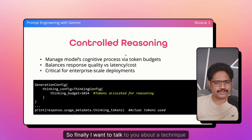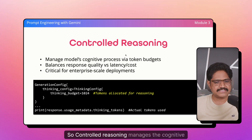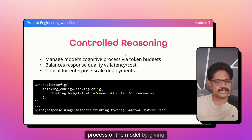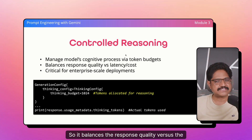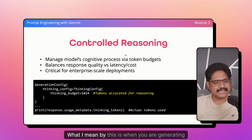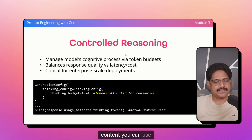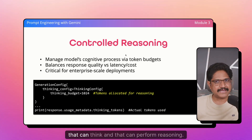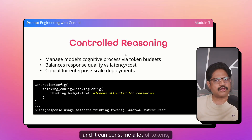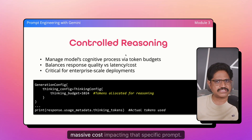Finally, I want to talk about a technique that is very unique to Gemini called controlled reasoning. Controlled reasoning manages the cognitive process of the model by giving a budget based on tokens. It balances response quality versus cost, and it is very critical for large-scale enterprise deployments. When generating content, you can use models that can think and perform reasoning — but letting the LLM reason can be a rabbit hole. It can go very deep, consume a lot of tokens, and result in a massive cost impact for that specific prompt.